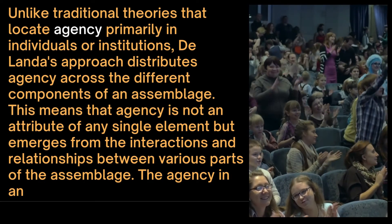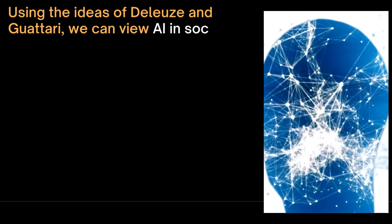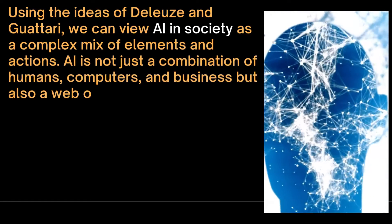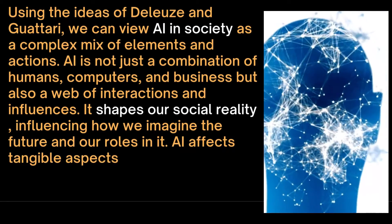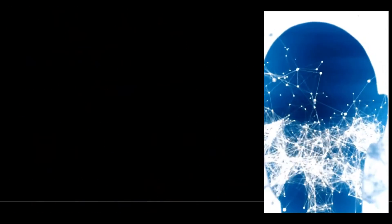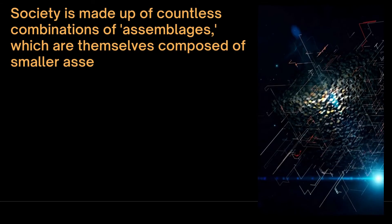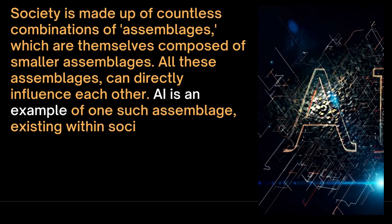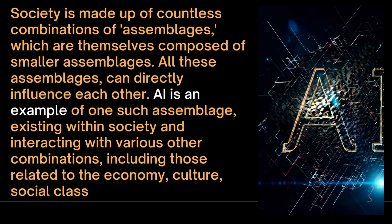Using the ideas of Deleuze and Guattari, we can view artificial intelligence in society as a complex mix of elements and actions. AI is not just a combination of humans, computers, and businesses, but also a web of interactions and influences. It shapes our social reality, influencing how we imagine the future and our roles in it. AI affects tangible aspects of our lives, and its components work together to create real-life impacts. Society is made up of countless combinations of assemblages, which are themselves composed of smaller assemblages that can directly influence each other. AI is an example of one such assemblage, existing within society and interacting with various other combinations, including those related to the economy, culture, social classes, identities, and the natural environment.